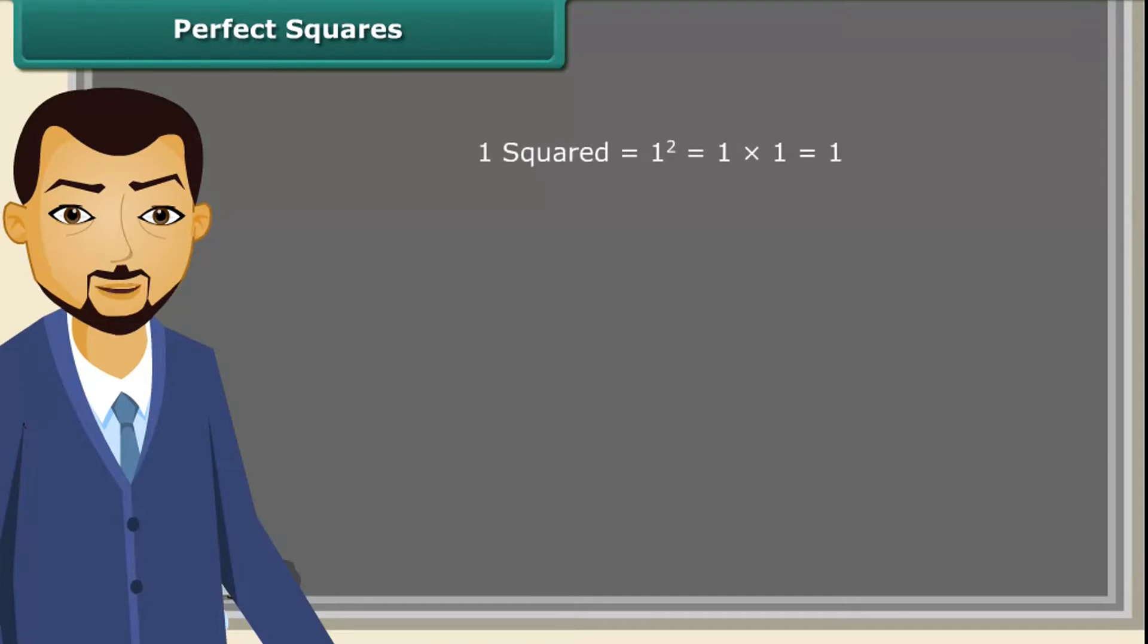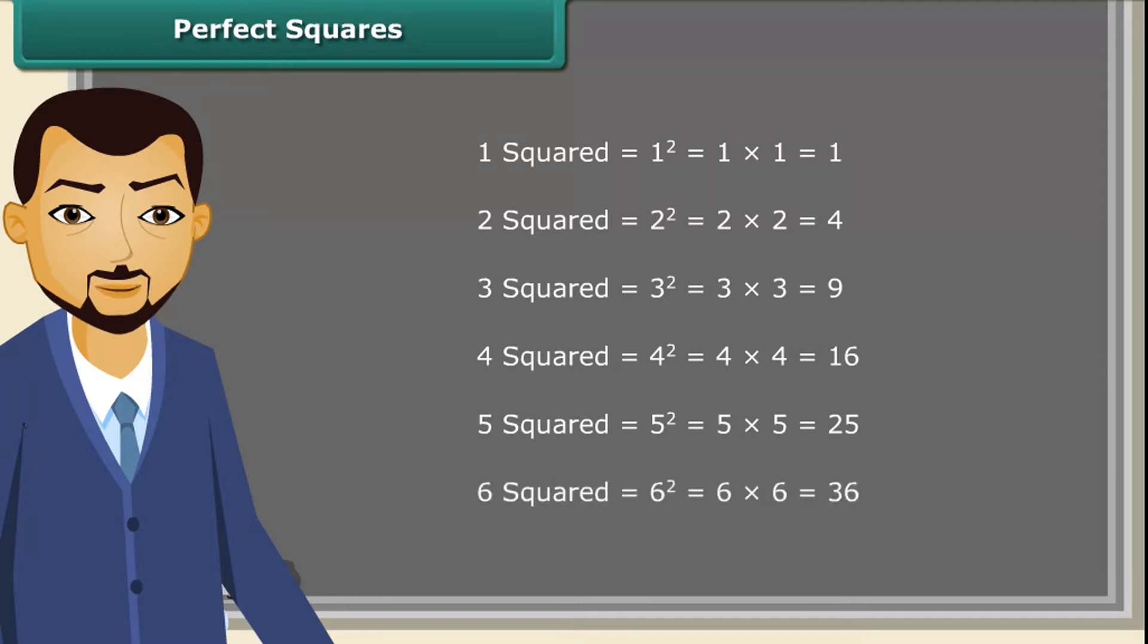Let us read. 1 square is 1. 2 square is 4. 3 square is 9. 4 square is 16. 5 square is 25 and so on.